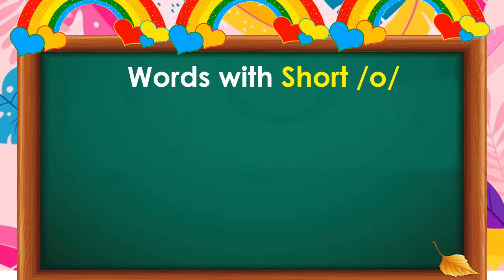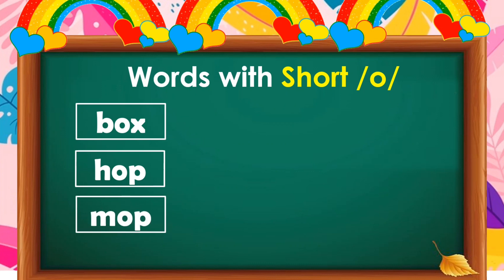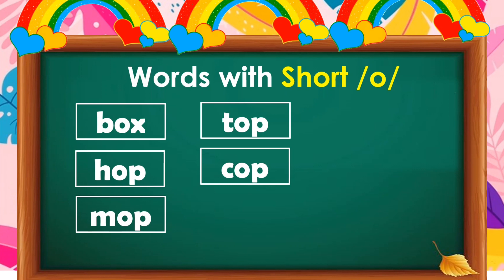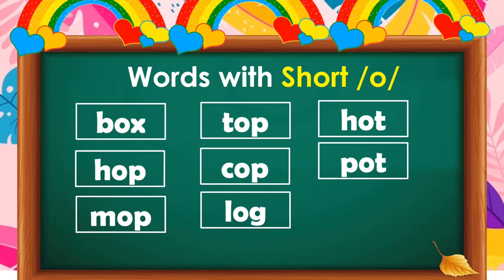Words with short O sound: box, hop, mop, top, cup, log, hot, pot, sub.